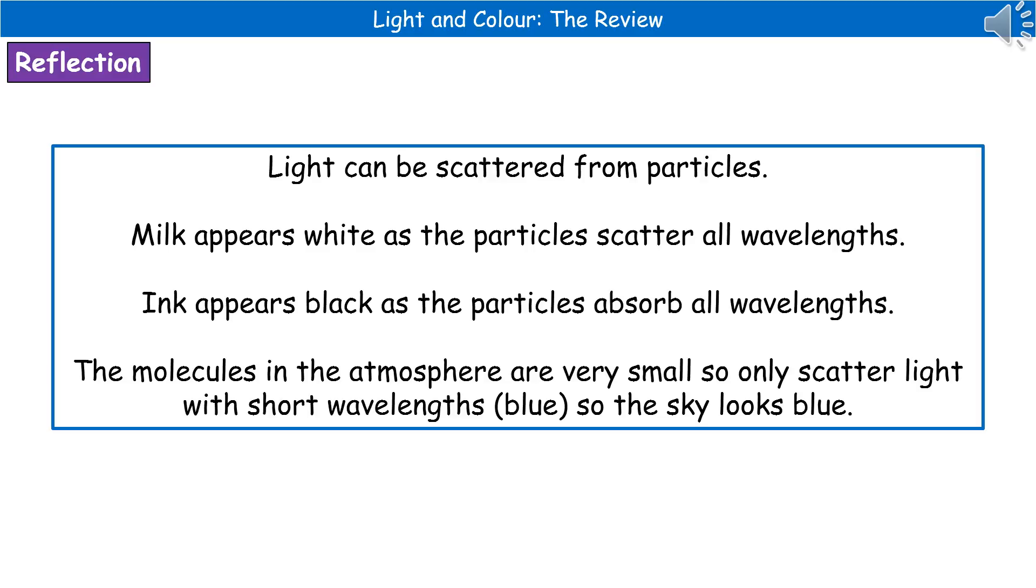When we're thinking about particles and molecules, they do have the ability to scatter light. So when we think about our atmosphere, which is made up of a range of different molecules, then they're very, very small. So they're only going to scatter light with the short wavelengths. So blue light. Hence why our sky looks that lovely blue color and not something else.